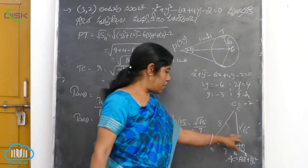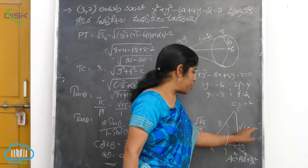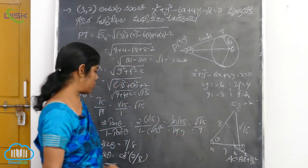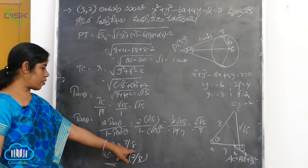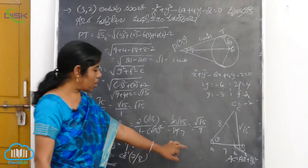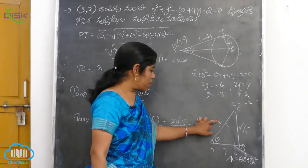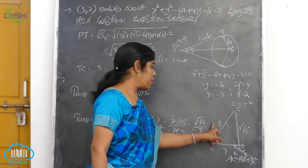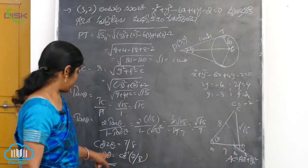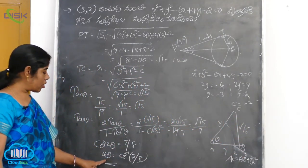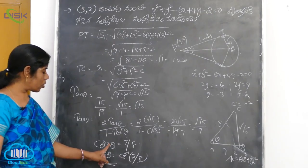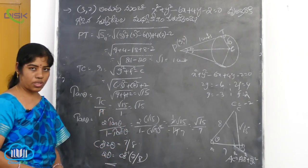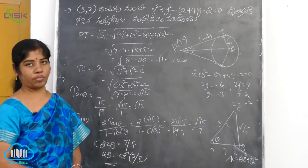15 minus 7 equals 8. The square root cancels. 15 minus 7 gives 8. So cos 2theta equals 7 by 8. For cos, we take 7 by 8. For sin, we take root 15 by 8. So the angle: 2theta is equal to cos inverse of 7 by 8.